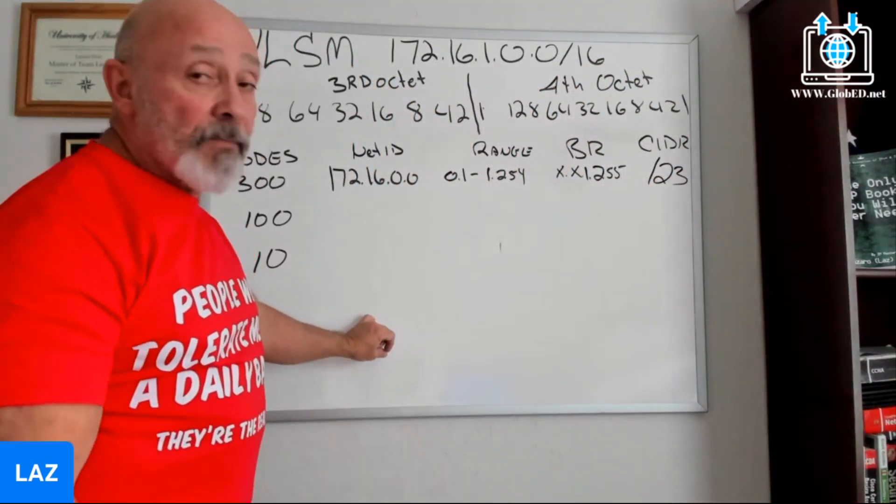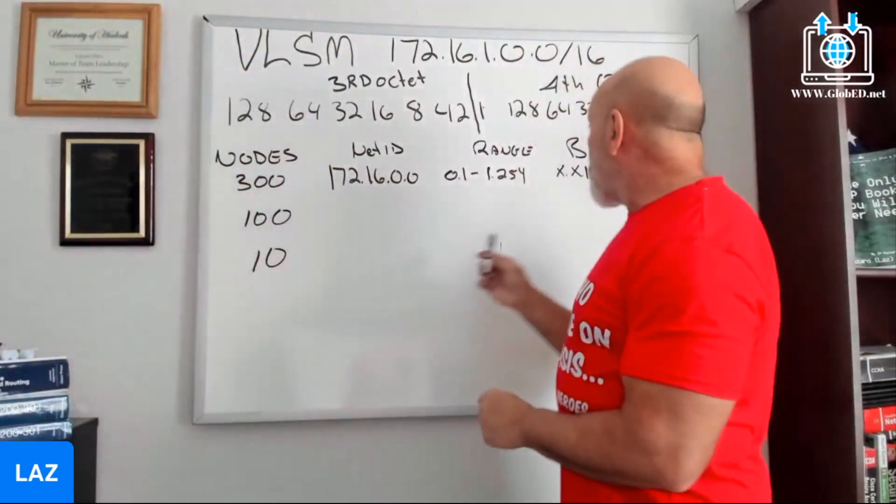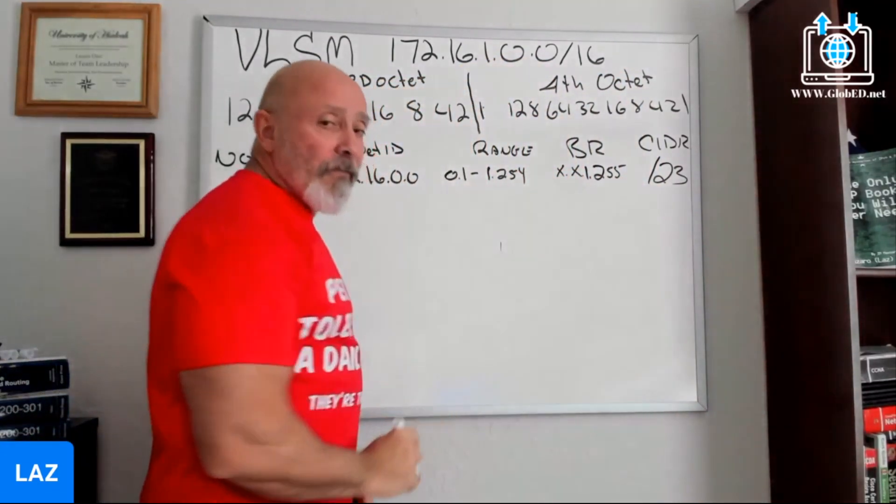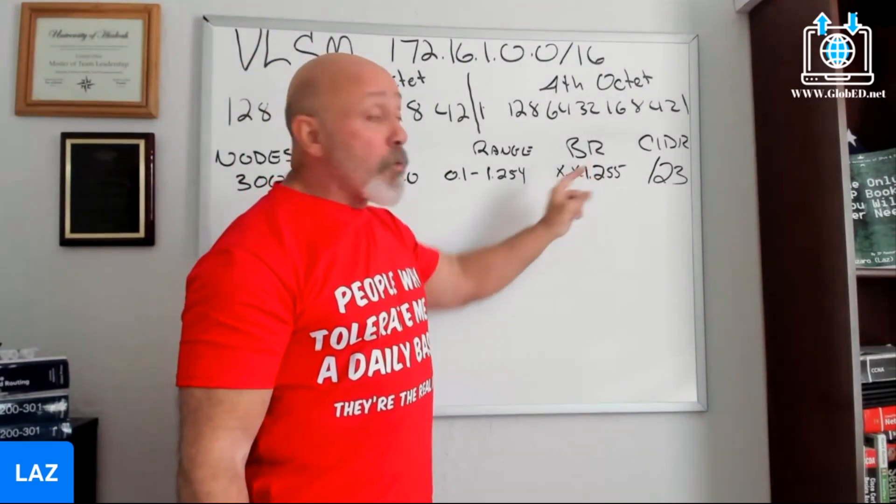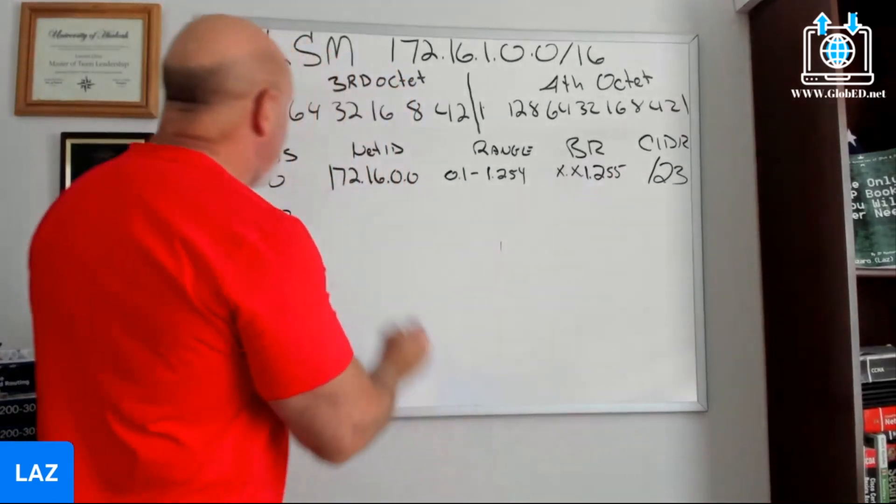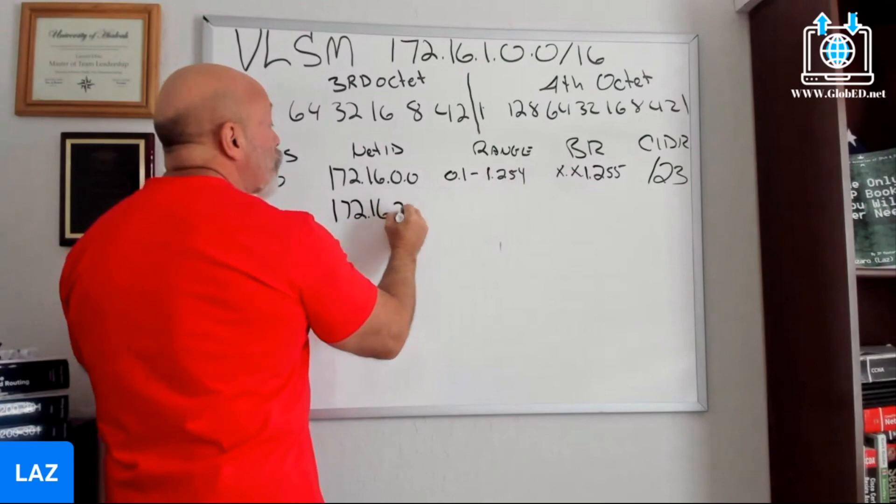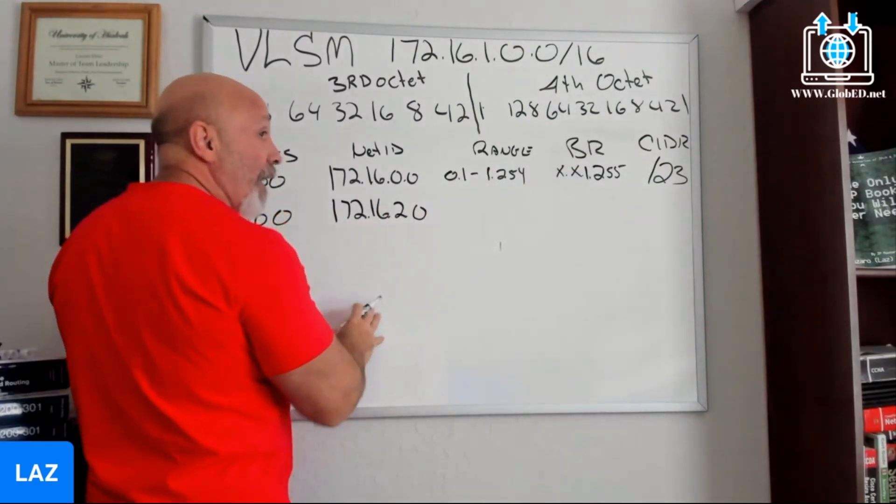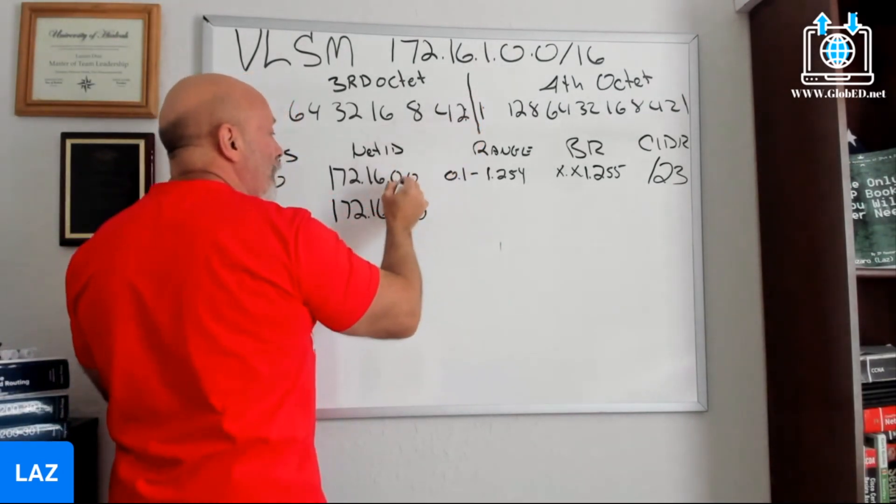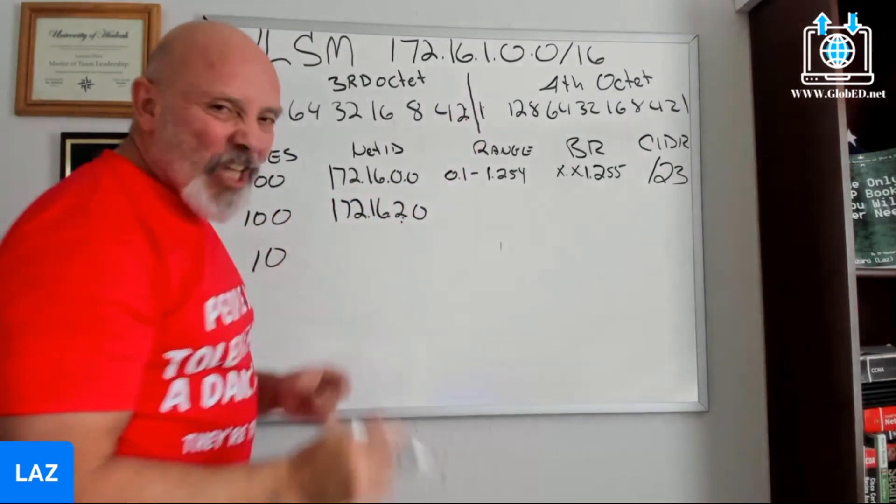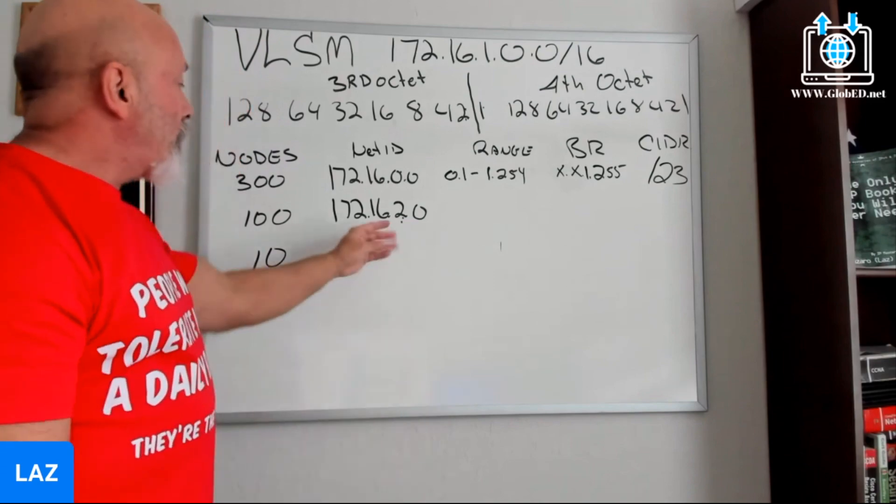When you're doing VLSM, remember it's not to waste IP addresses, so we look at this last number. What's up here? 1.255. What comes after that? You max this out, it resets, changes this to 2 and resets to 0. So your next starting point is 172.16.2.0. And if you want to check if you're right, look at the incrementation - it's by 2 in the third octet. 2 and 0 is 2. It's like a check and balance.